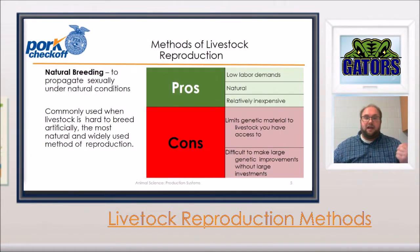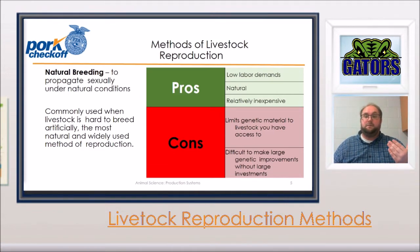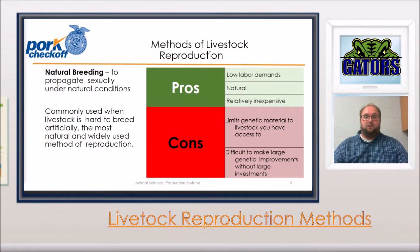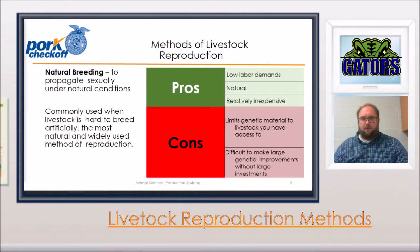Our first on the list of methods of livestock reproduction is the simplest — natural breeding. The definition of natural breeding is to propagate sexually under natural conditions. This is when we let male and female animals interact when the female is in estrus — we also call this heat — and they are ready to produce offspring. This is commonly used when livestock is hard to breed artificially, and it is the most natural and widely used method of livestock reproduction.